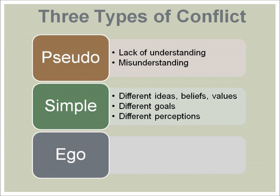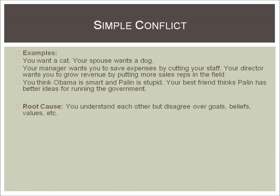Despite the name, simple conflict is not simple at all. It occurs because of different ideas, beliefs, and values, and also because of different goals and perceptions. The following examples all illustrate simple conflict. Example one: you want a cat, your spouse wants a dog. Example two: your manager wants you to save expenses by cutting your staff; your director wants you to grow revenue by putting more sales reps in the field. Example three: you think Obama is smart and Romney is stupid; your best friend thinks Romney has better ideas for running the government. In each of these instances, the participants understand each other but disagree over goals, beliefs, and values.